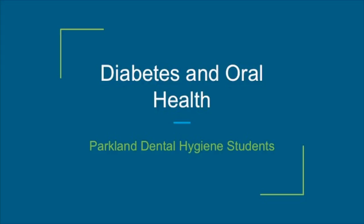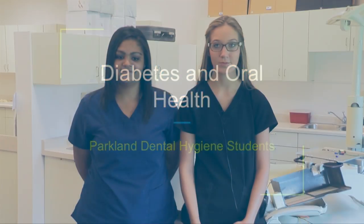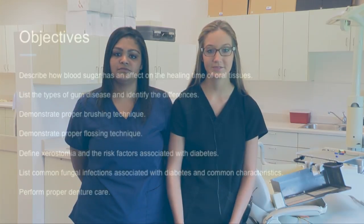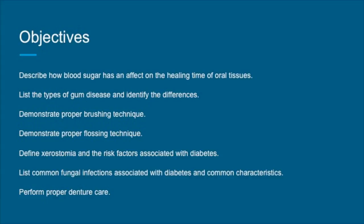People with diabetes know the disease can harm the eyes, nerves, kidneys, heart, and other important systems in the body — but did you know diabetes can also cause problems in the mouth? In this video we are going to discuss the link between blood sugar and the oral environment, and also common oral conditions associated with diabetes and how you can recognize and prevent them.